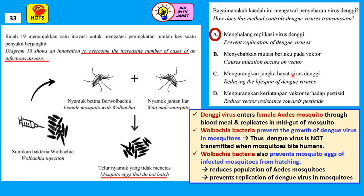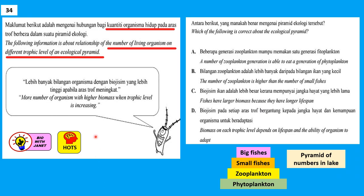Option B — Wolbachia causes mutation — is not mentioned. Option C — reducing the lifespan of Dengue virus — is incorrect; the correct statement would be reducing the lifespan of the mosquito host. Option D — reducing vector resistance towards pesticide — is also unrelated to Wolbachia bacteria. Answer is A.